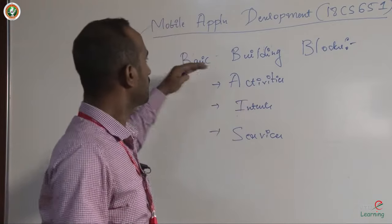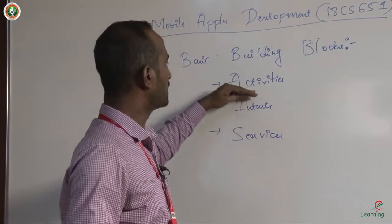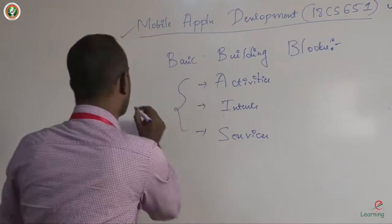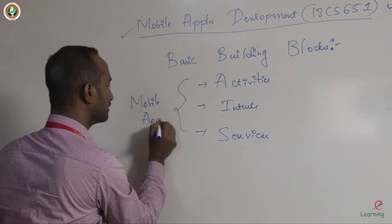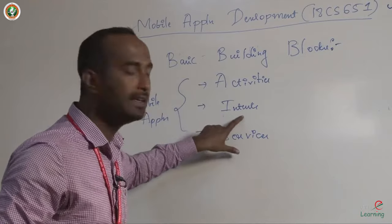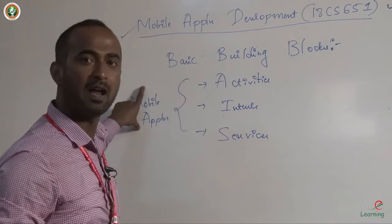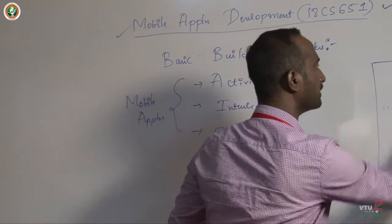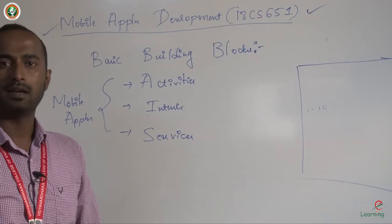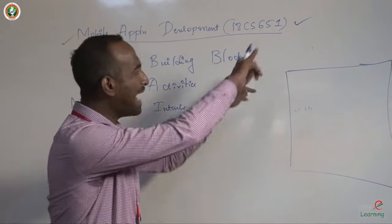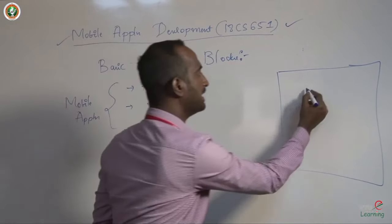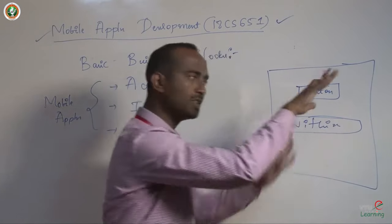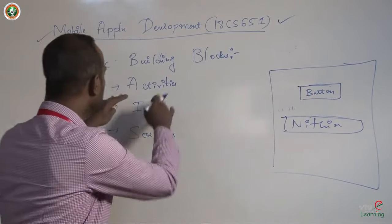What are these basic building blocks — activities, intents, and services? All three together make a mobile application using Android. What is an activity? An activity is nothing but a blank white sheet — an empty activity, a blank white page where you can design whatever you want. You can place a button, a text field to display your name, anything you want. Such a thing is called an activity.